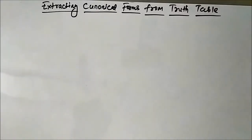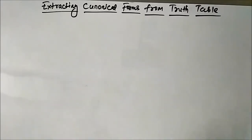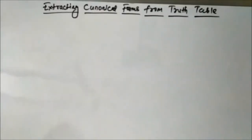Hello friends, welcome to engineering tutorial. In this video we are going to discuss the concept of extracting canonical forms from a truth table. Suppose we have a truth table given with a number of inputs and an output, and from that truth table we have to determine the boolean expression of the output in SOP and POS form.